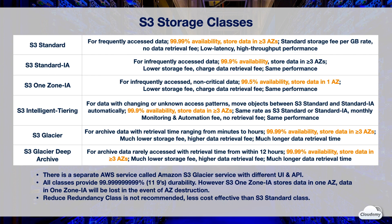Both S3 Glacier and Glacier Deep Archive have 99.99% availability and store data across at least three AZs. You pay a much lower storage fee but a higher data retrieval fee. You might still see a legacy storage class called Reduced Redundancy on the AWS console, however it's not recommended as it's less cost-effective than S3 Standard.